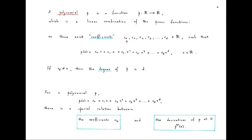There exist fixed numbers c₀ to c_d in ℝ such that p(x) is given by c₀ times 1, plus c₁ times x, plus c₂ times x squared, and so on up to c_d times x^d, where x is in ℝ. These fixed numbers c₀ to c_d are called the coefficients of this polynomial, and if c_d is not equal to 0 then we say that the degree of this polynomial p is d.